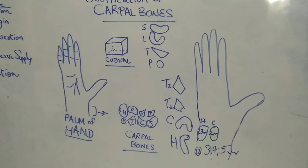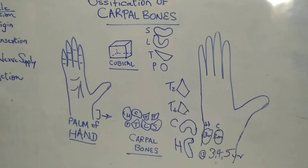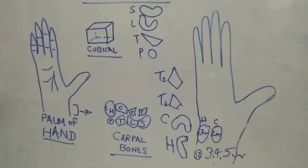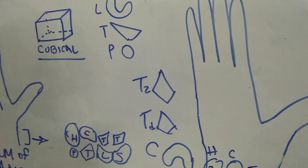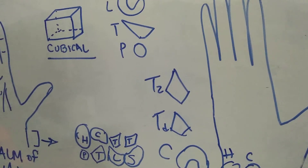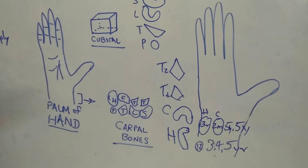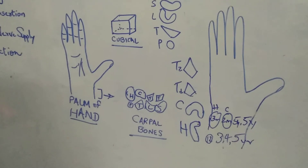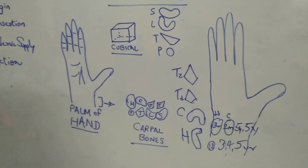Next, trapezium and trapezoid also ossify at 5 years of age. How to remember this? The capitate ossifies at 2 months and the hamate at 3 months. Add 2 plus 3 and you get 5 — so trapezium and trapezoid ossify at 5 years.